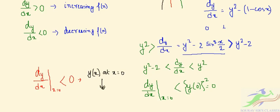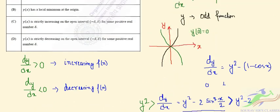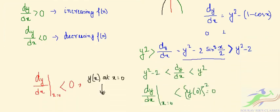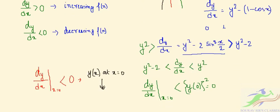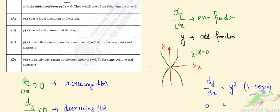So let us see the options C and D. Option C says it is strictly increasing on the open interval, which is wrong. Option D says y(x) is strictly decreasing on the open interval minus delta to delta for some positive real number delta. Since y is strictly decreasing at x = 0, in the interval minus delta to delta the function will also be strictly decreasing. So option D is the correct option.